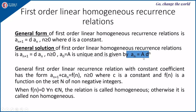The nth term is obtained by d raised to the power n, multiplied by the constant a, which is a(0). The general first-order linear recurrence relation with constant coefficients has the form a(n+1) + c·a(n) = f(n). If f(n) = 0, it is homogeneous; otherwise it is non-homogeneous.